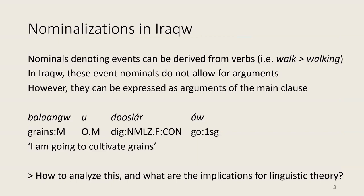Today I would like to talk about nominalizations in this language. Like in many other languages, nominals that denote events can be derived from verbs. For example, in English, if you have a verb 'walk,' you can derive a nominal 'walking.' These event nominals have certain verbal properties as well as nominal properties, but one particular property that they don't have is the ability to express arguments. There are a few strategies that Iraku has to express arguments of event nominals, and one of them is that they can be expressed as arguments of the main clause instead. So how do we analyze this property, and what are the implications for linguistic theory?